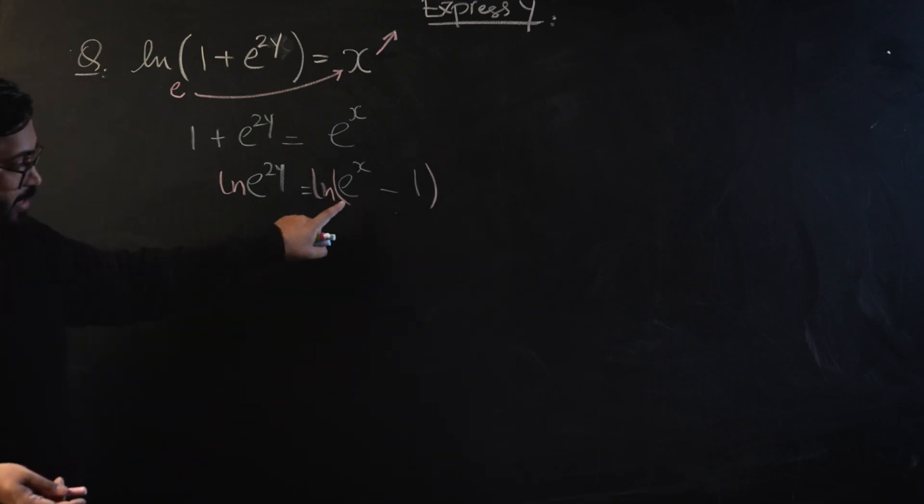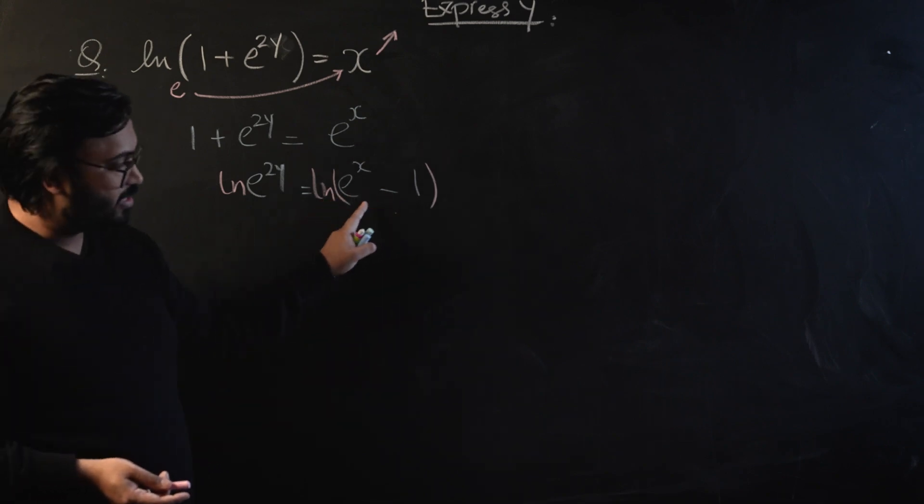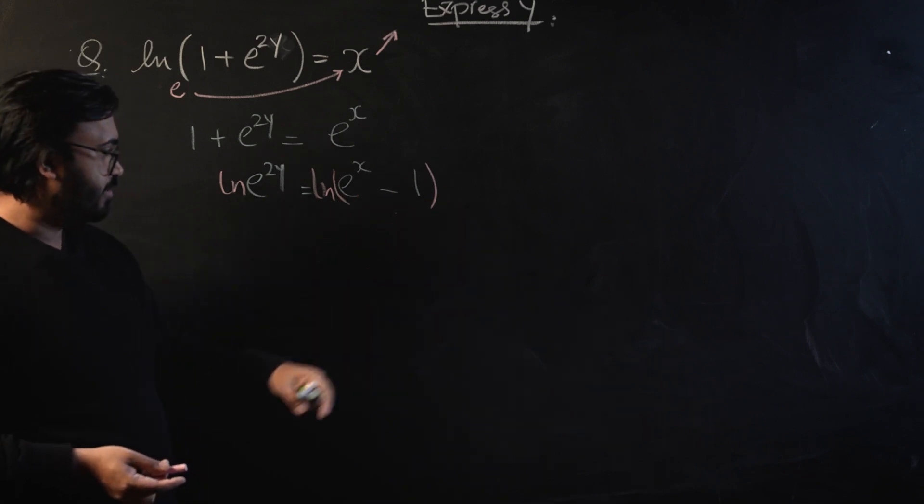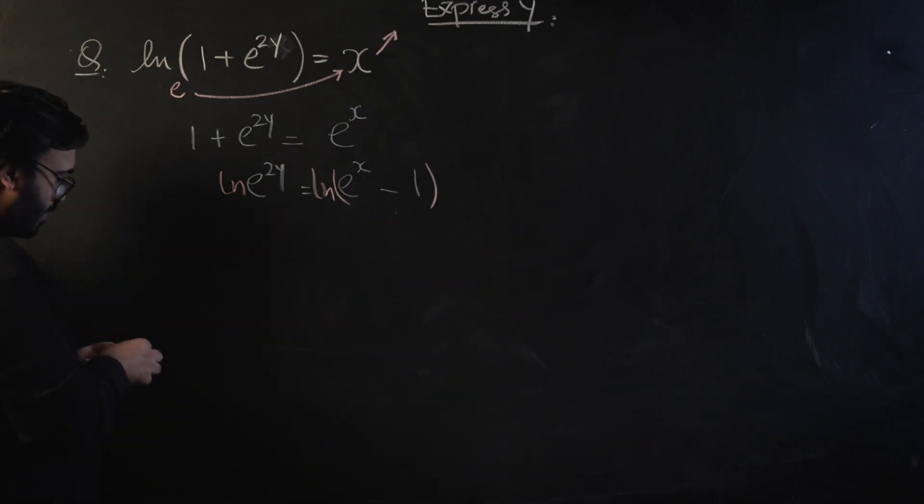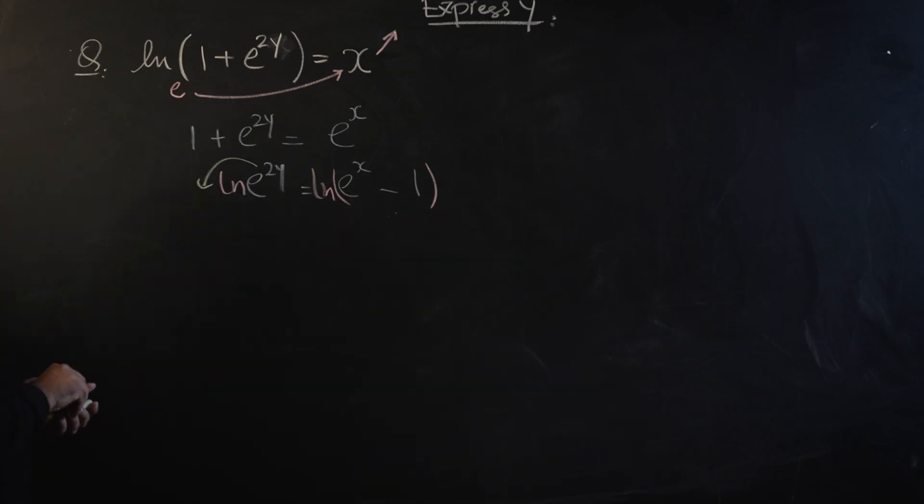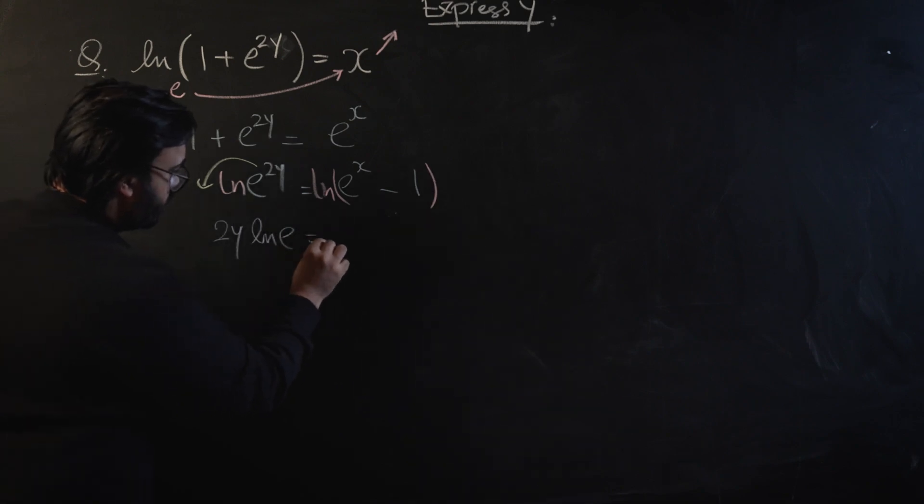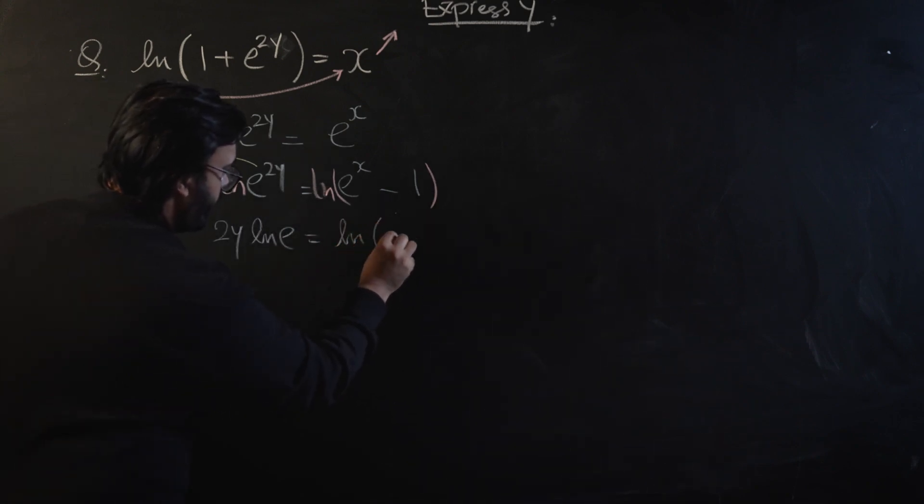Now to get rid of this e, we're going to introduce logarithm on both sides. So let's introduce natural logarithm on both sides. Be careful that on the right hand side there are two terms and both of them will come under the argument of a singular logarithm, and please remember that we cannot open this logarithm into two separate logarithms.